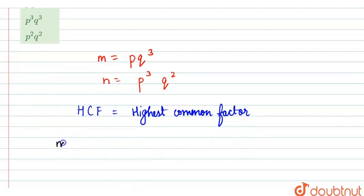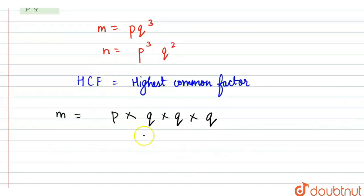we can write M is equal to - it is written P into Q raised to 3, so 3 times we can multiply Q here. So this is our M.